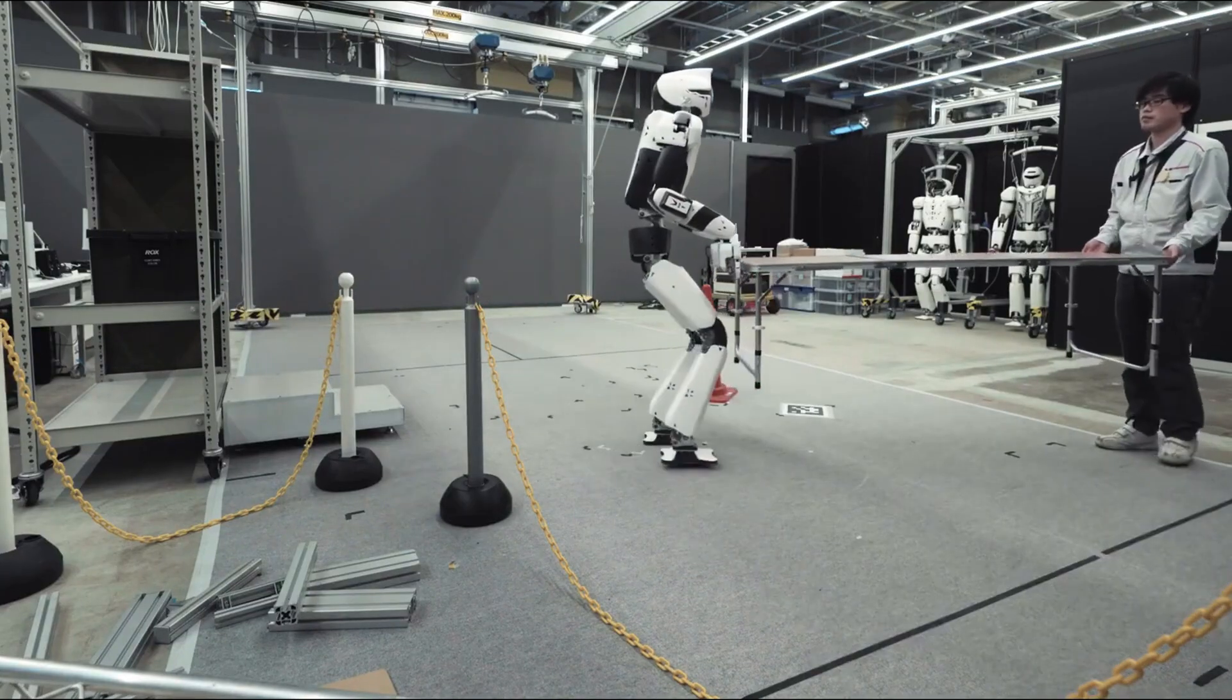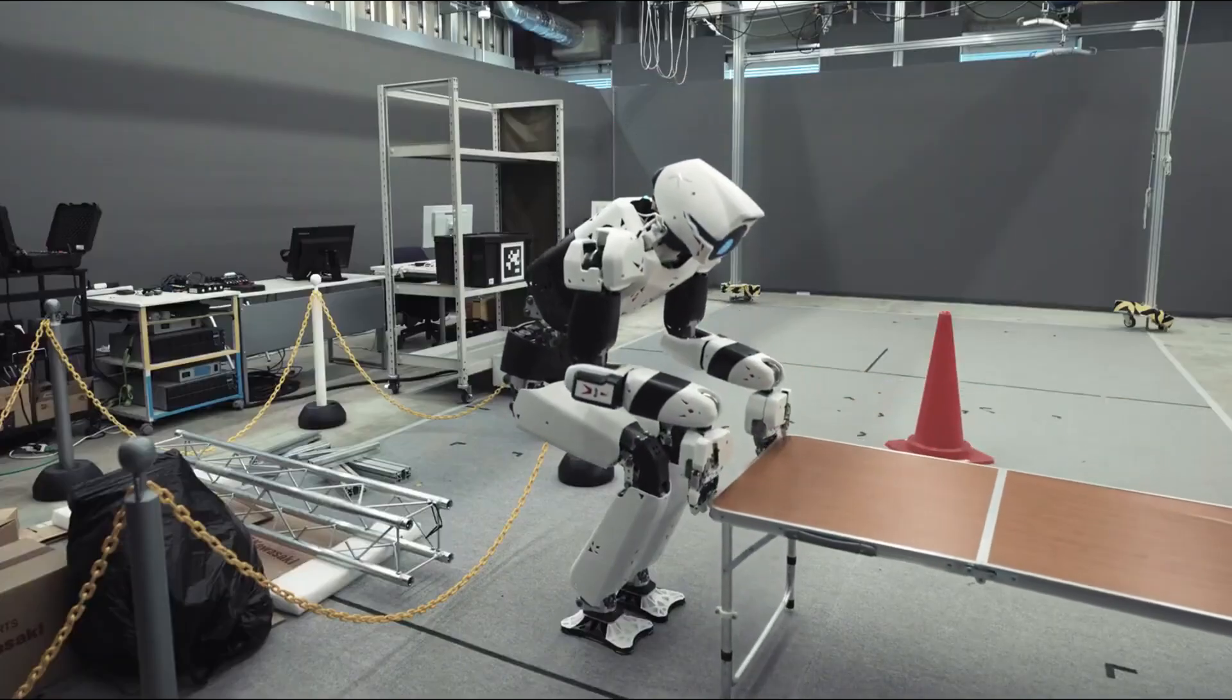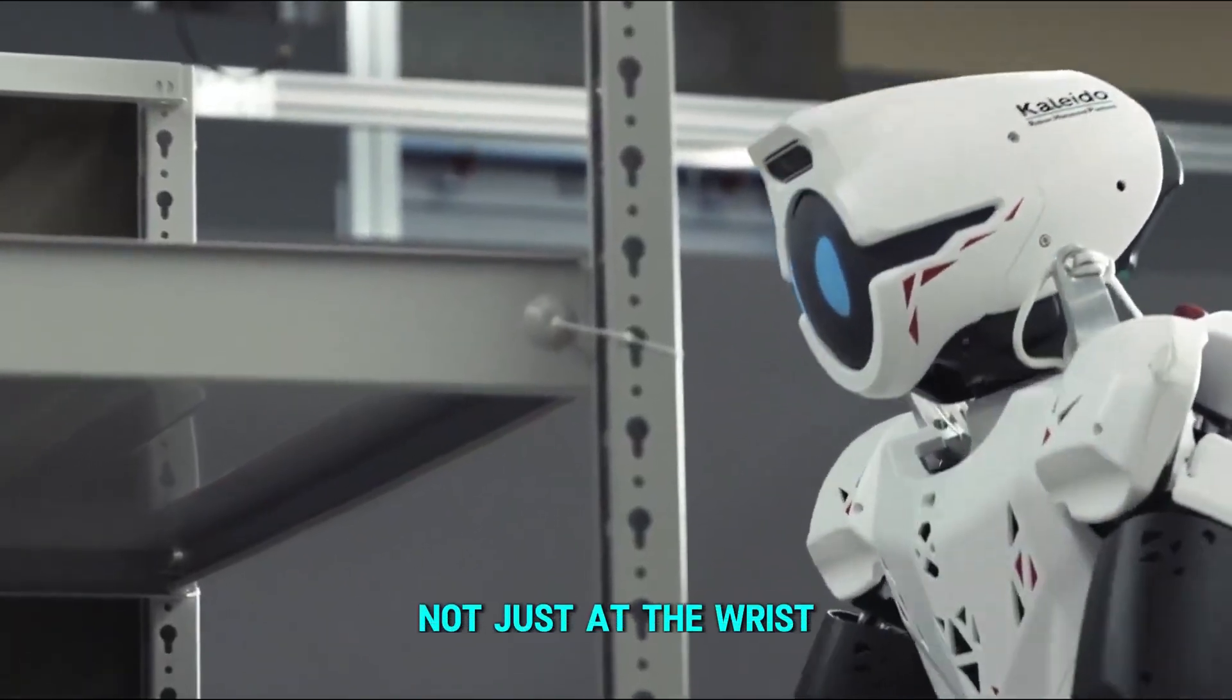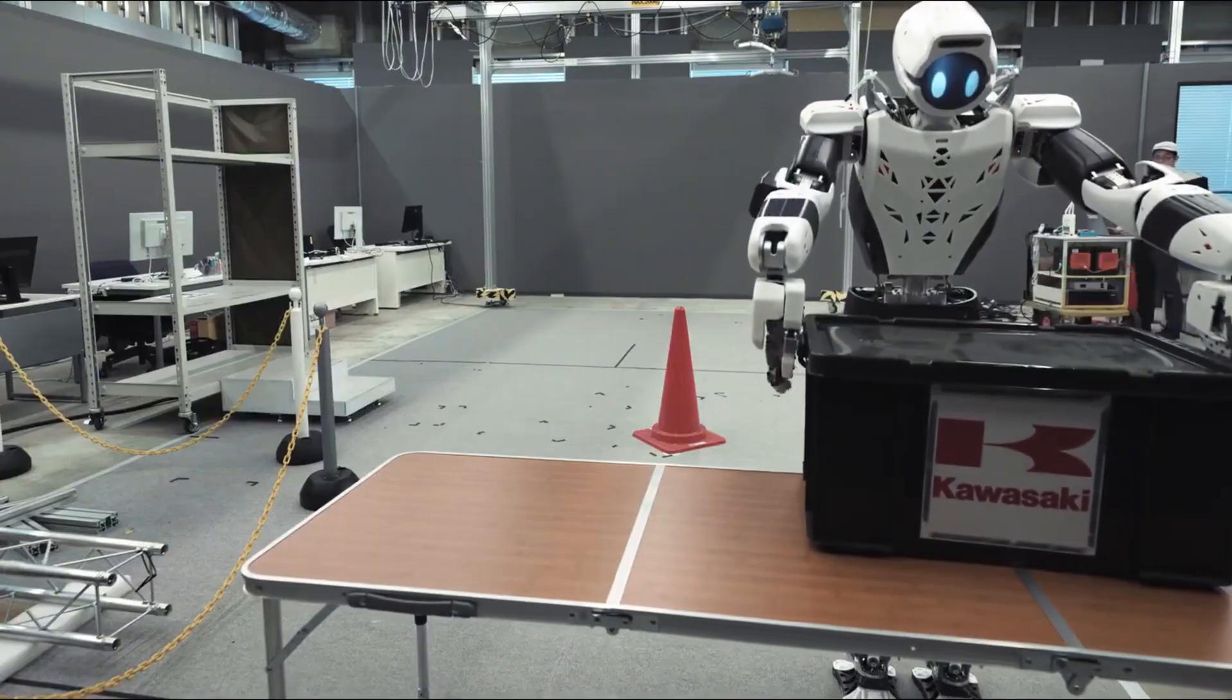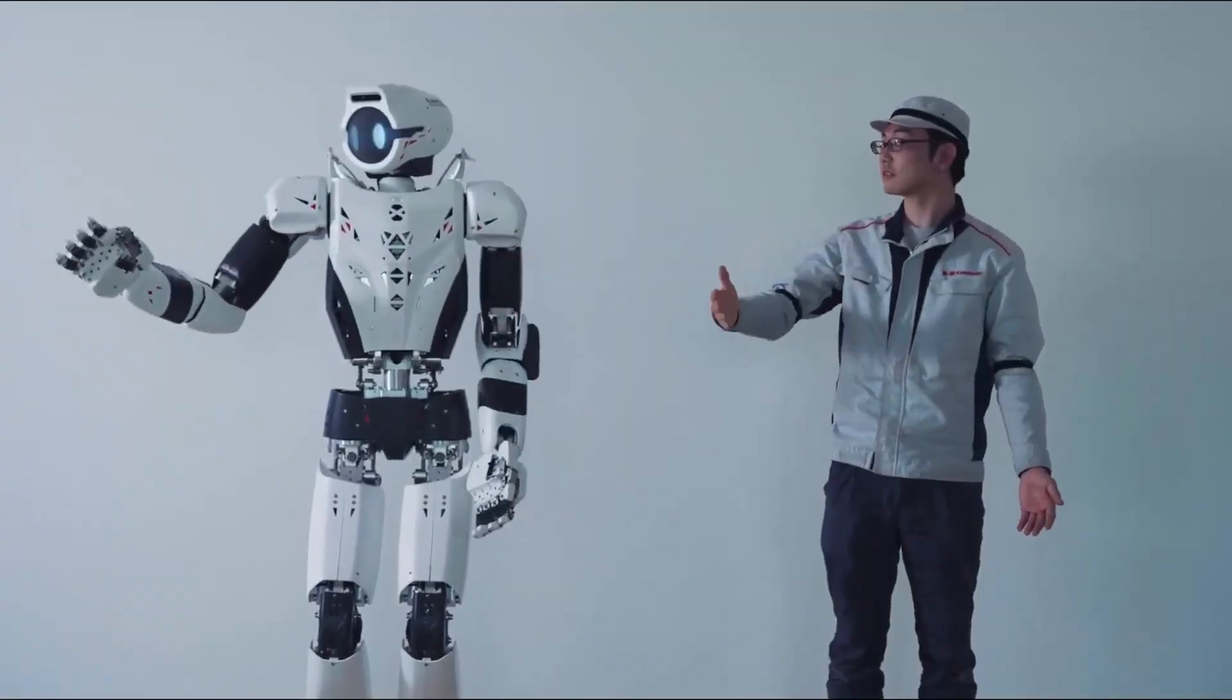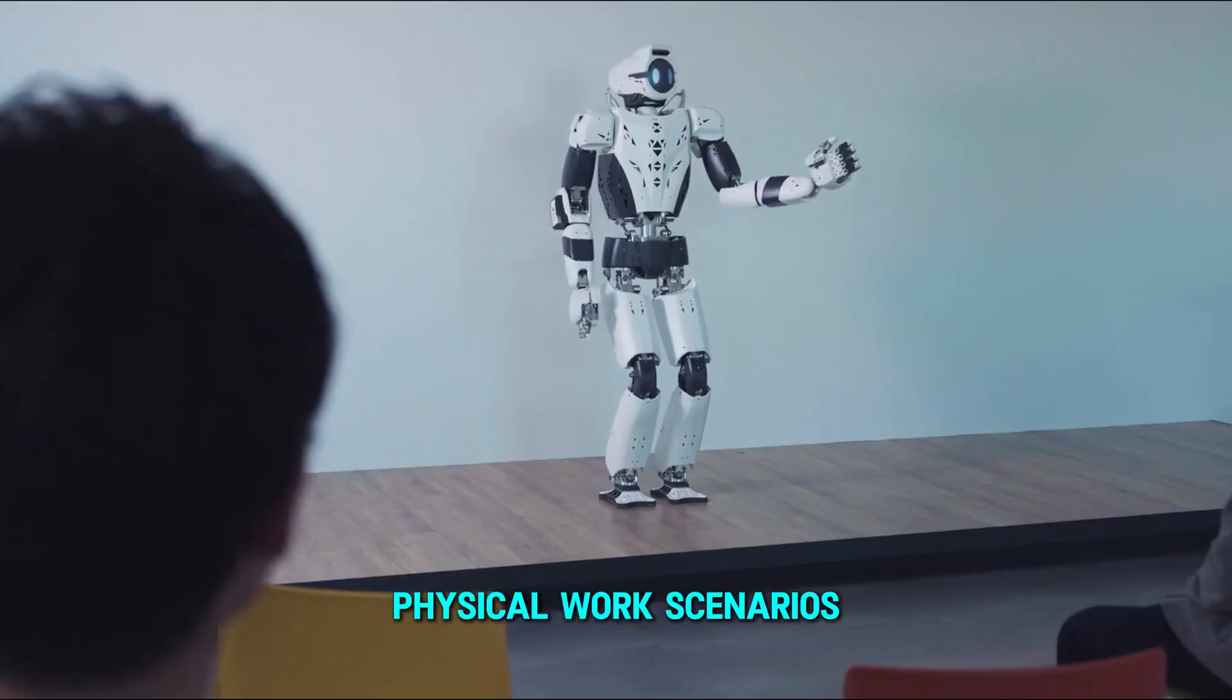This advancement allows Kaleido-8.0 to detect and respond to forces exerted along its entire arm, not just at the wrist. Such detailed sensitivity empowers the robot to handle delicate tasks and engage more robustly in complex, physical work scenarios.